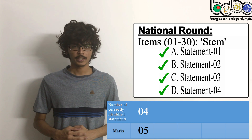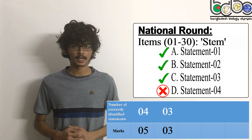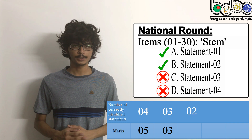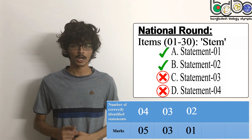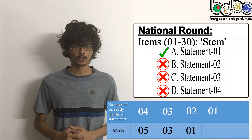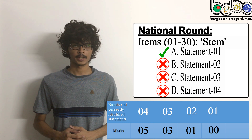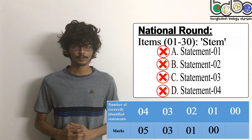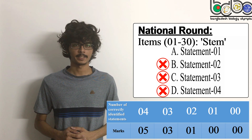If you correctly identify 3 statements, you will receive 3 marks. If you correctly identify 2 statements, you will receive 1 mark. But if you correctly identify only 1 statement of the 4, you will not receive any mark at all. Similarly, if you correctly identify none of the statements, you will also get a 0 in that item.